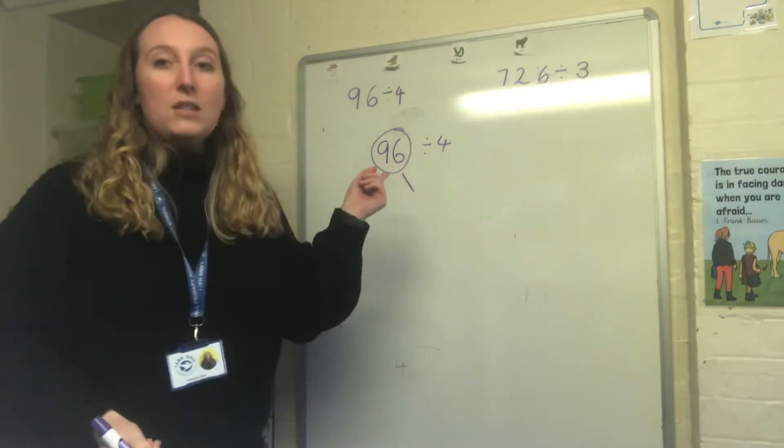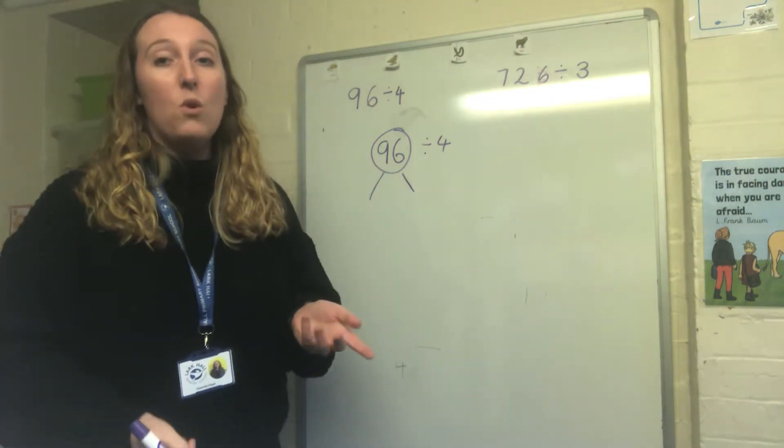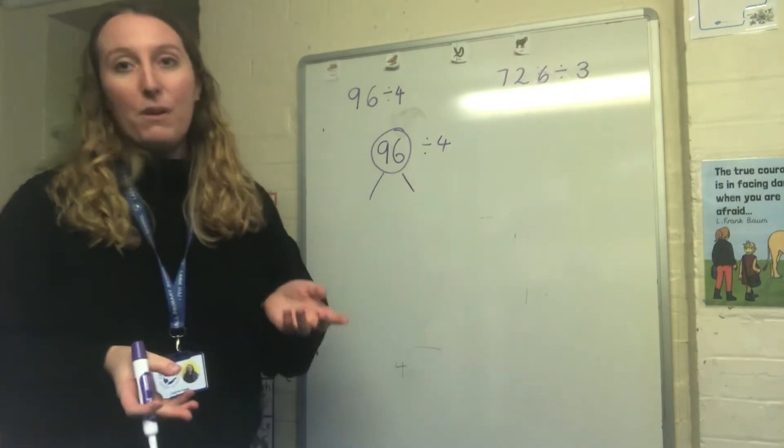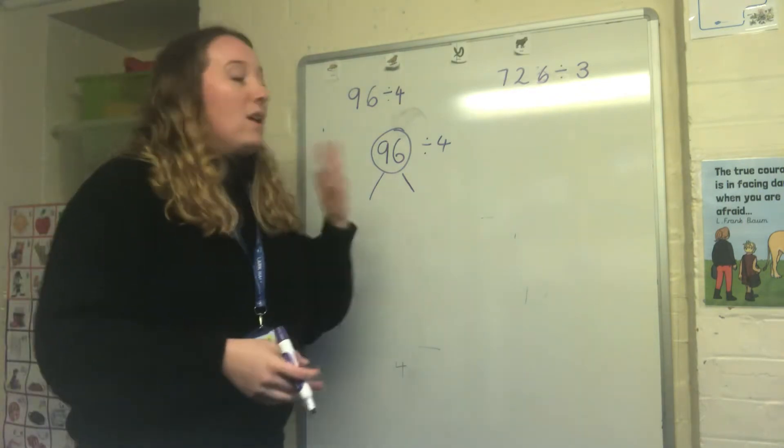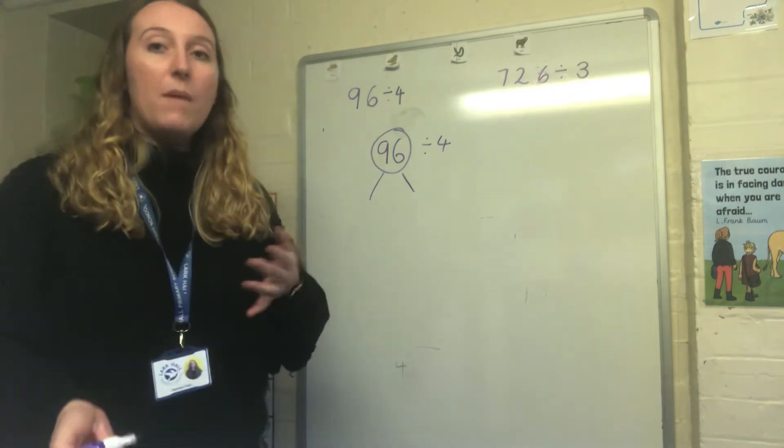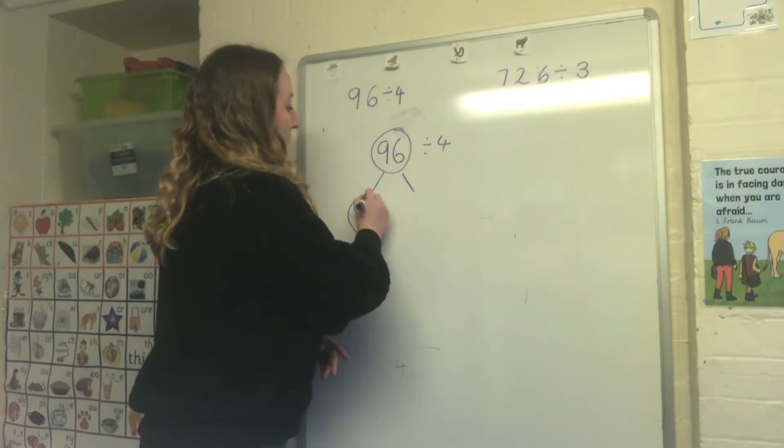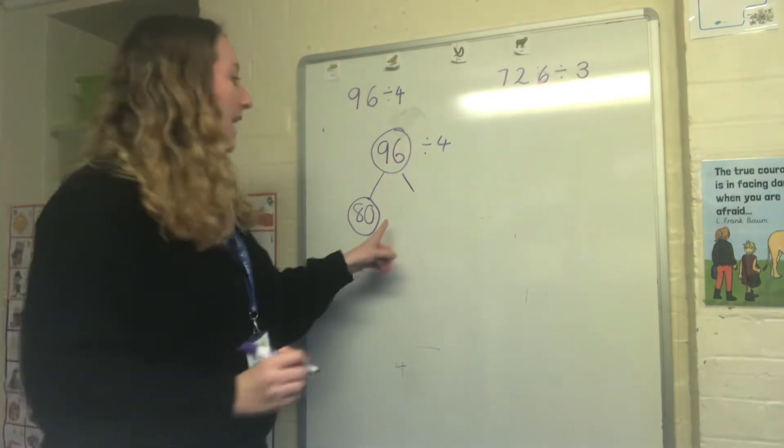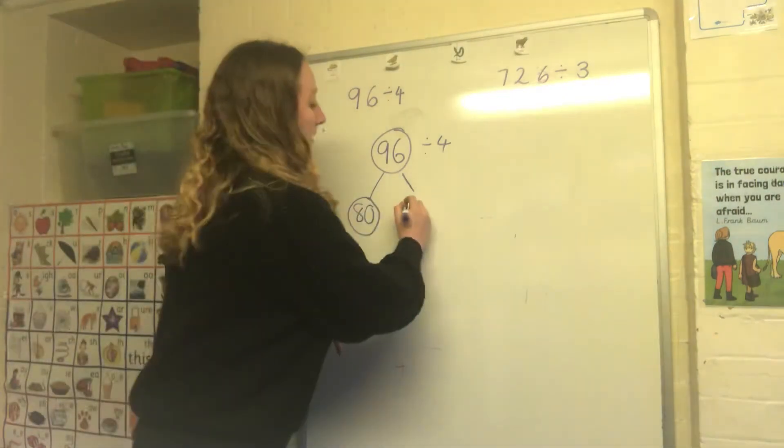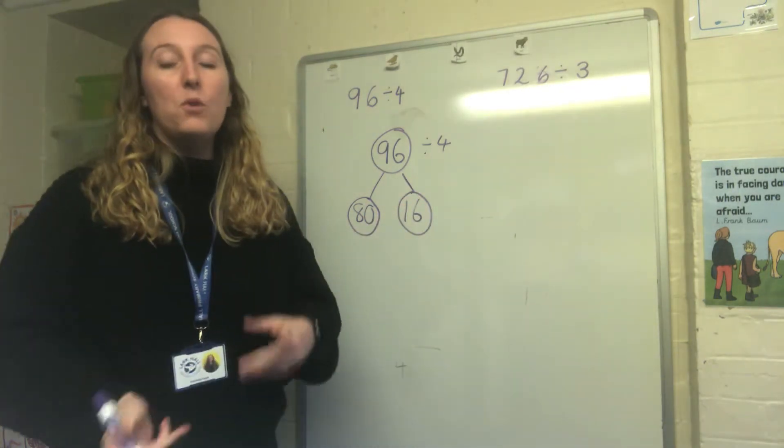When I'm thinking about partitioning I'm not going to partition it into 90 and 6 because I know those numbers aren't easily divided by 4. So I need to spot some patterns in my numbers to help me find numbers that can be divided by 4 to make it easier. I know that 8 goes into 4 so I know that 80 must go into 4. So I'm going to partition the number 96 into 80. And this part is going to be a number that adds to 80 to make 96. So I know 80 add 16 makes 96. And I know that 16 is also a multiple of 4 so it can be divided by 4.